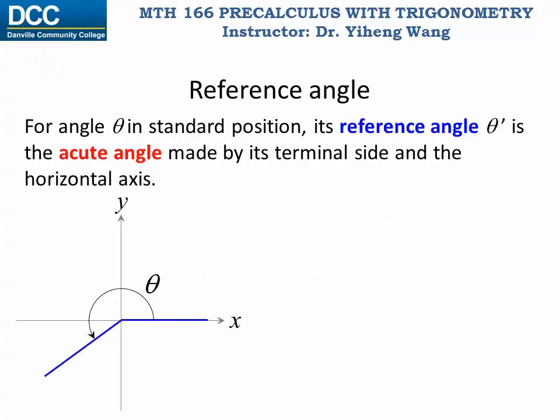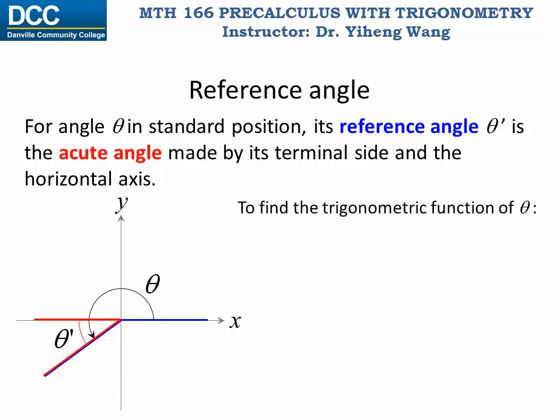So how do we find this reference angle? For an angle theta given in its standard position, its reference angle theta prime is the acute angle — the angle between 0 and 90 degrees, or 0 to π/2 in radians — made by the terminal side of angle theta and the horizontal axis. For the angle theta as shown, its reference angle theta prime is this one right here. As you can see, it is an acute angle and it is not given in standard position.